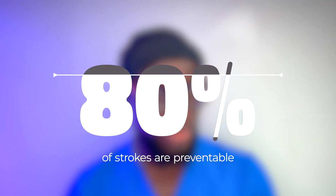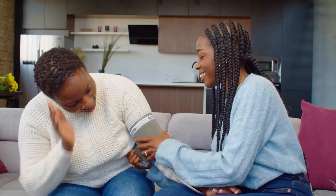Did you know that 80% of strokes are preventable? That means if five people have a stroke, four of them could have been prevented. To prevent a stroke, number one: control high blood pressure. High blood pressure is by far the biggest risk factor for developing a stroke, so please keep it under control.